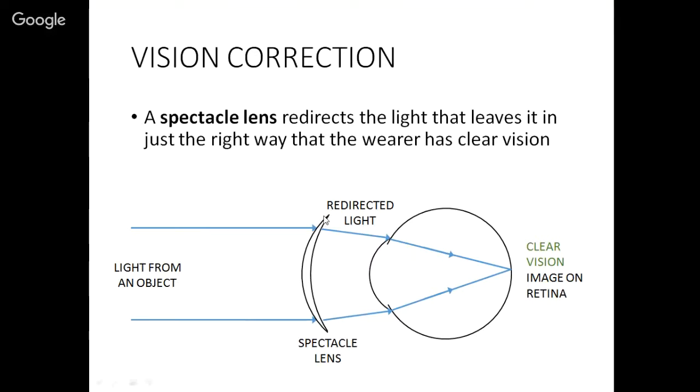Well, you put what's called a spectacle lens in front of your eye. We know that a lens will change the direction of light. So we want to change the direction of the light in just the right way that when the light then leaves the focusing components of the eye, you wind up with an image on the retina and you get clear vision. That's the job of a spectacle lens, to manipulate the light in such a way that you get an image forming in the same location as the retina of the eye.